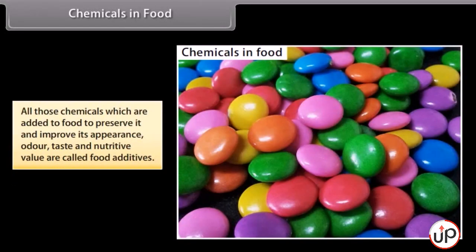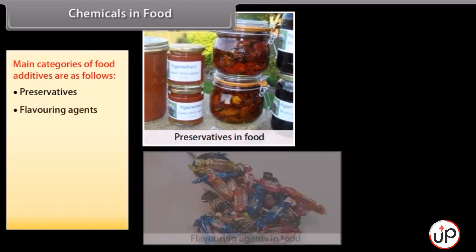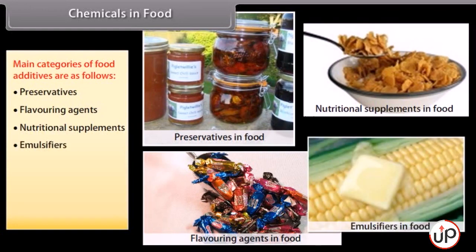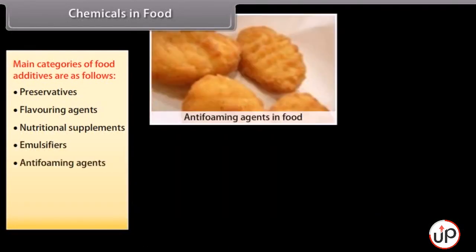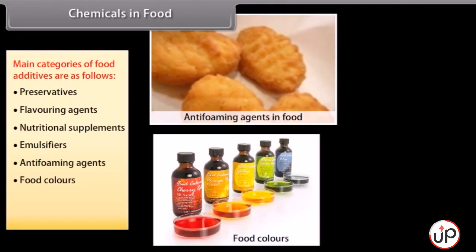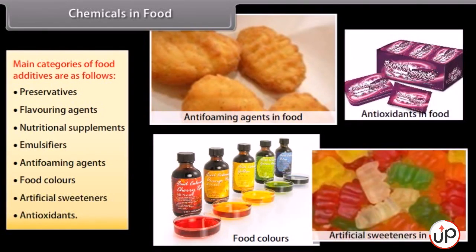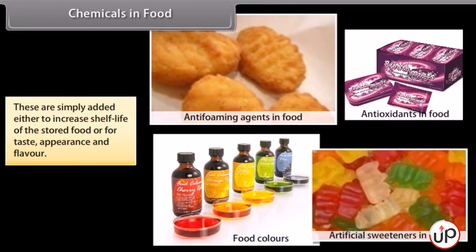Chemicals in food. All those chemicals which are added to food to preserve it and improve its appearance, odour, taste and nutritive value are called food additives. Main categories of food additives include: preservatives, flavouring agents, nutritional supplements, emulsifiers, anti-foaming agents, food colours, artificial sweeteners and antioxidants. These are added either to increase the shelf life of stored food or for taste, appearance and flavour.